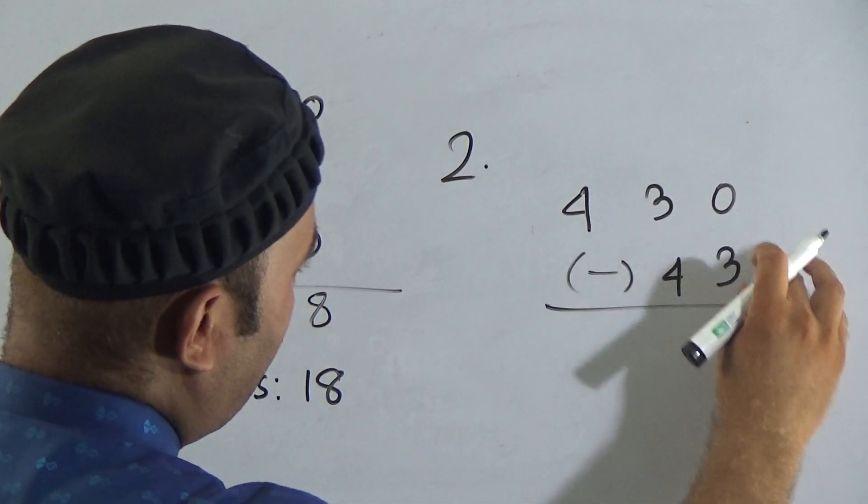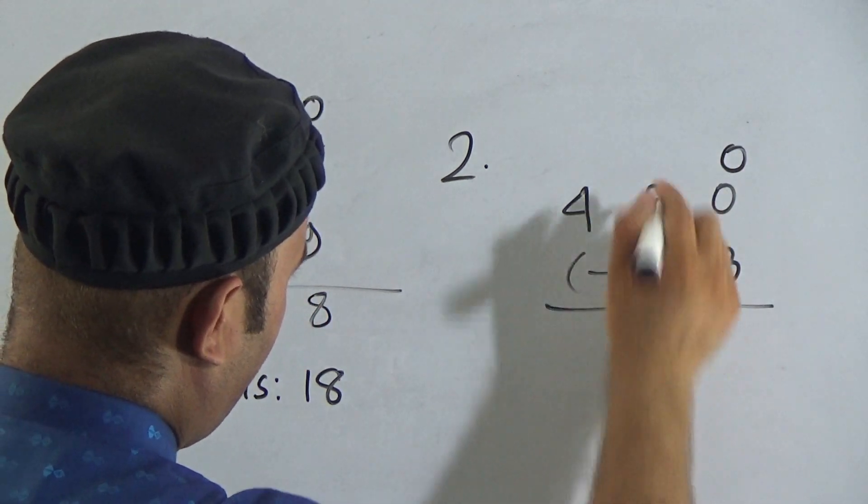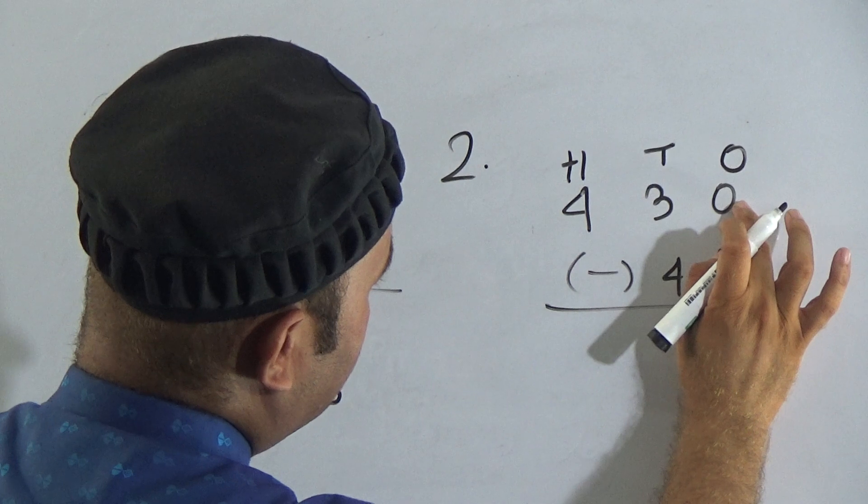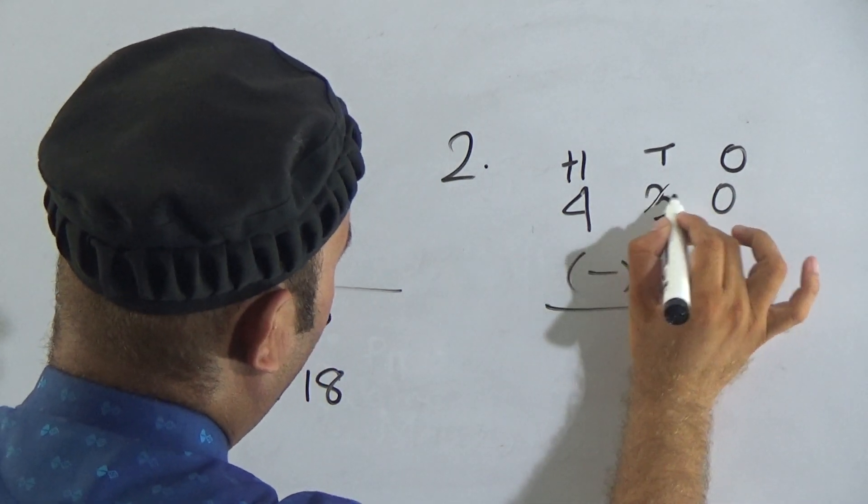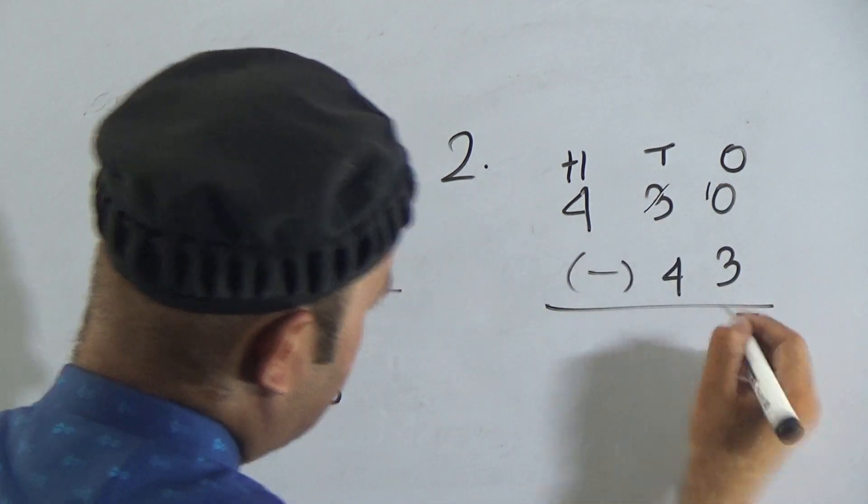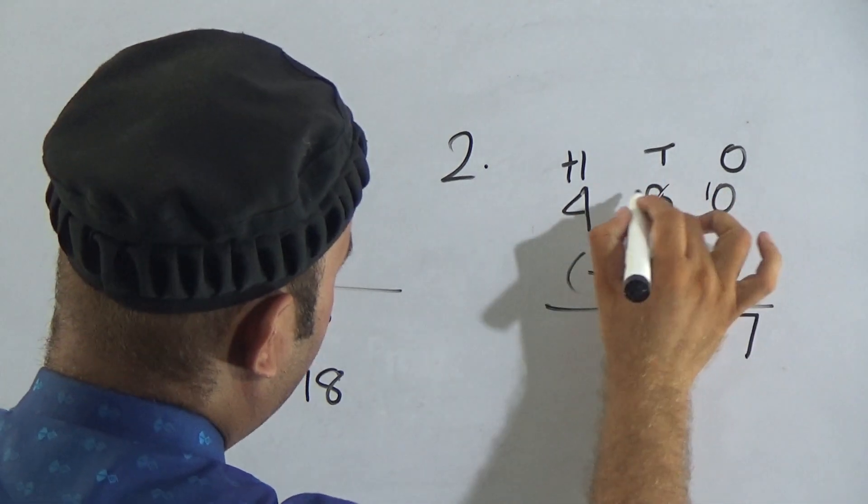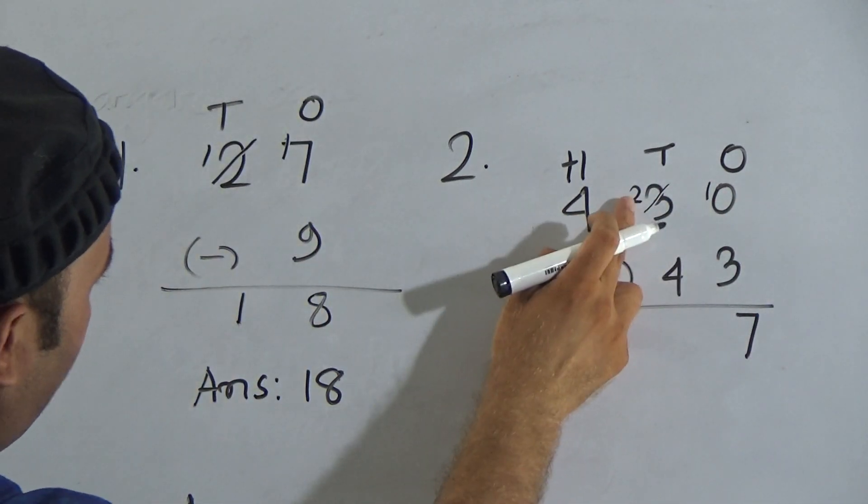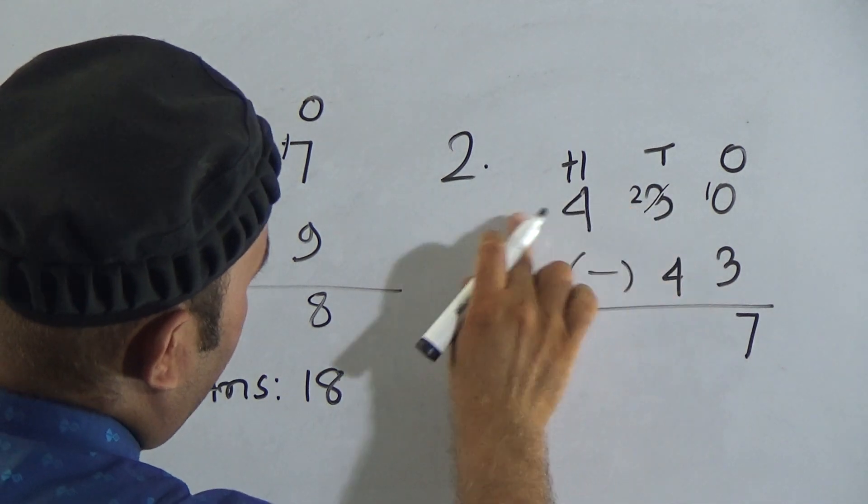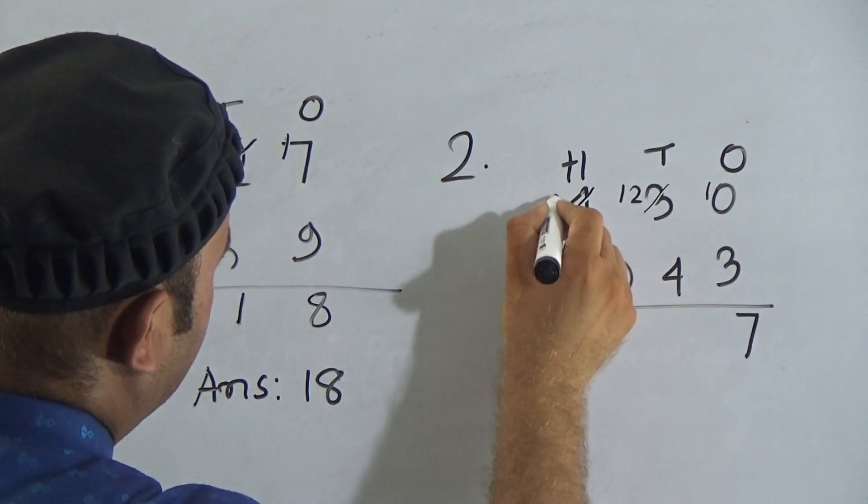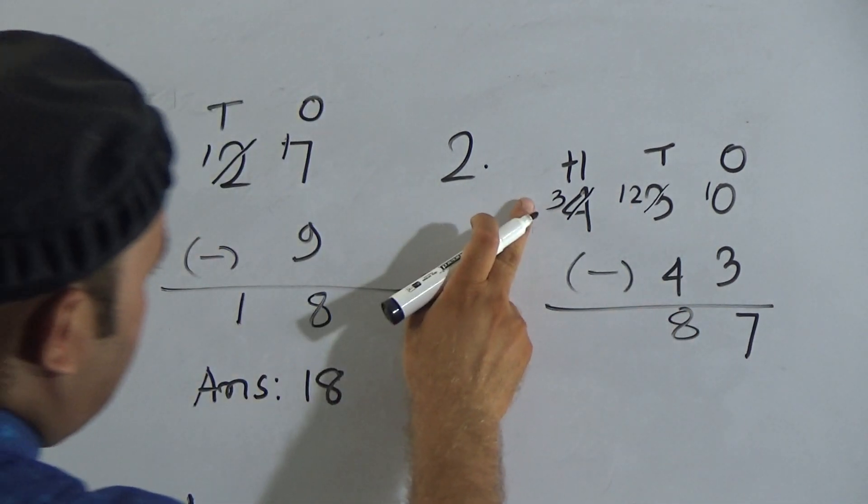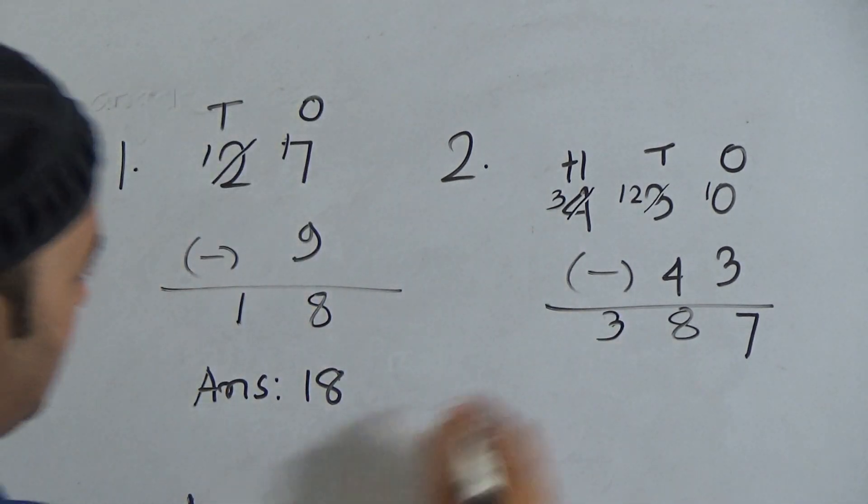Problem number 2: 430 and 43. 0 and 3 are in 1's place, 3 and 4 in 10's place, and 4 is in 100's place. 0 is smaller than 3, so we borrow 1, making it 10. 3 from 10 is 7. After giving 1, this becomes 2. Now 4 from 2—we borrow again from here, making it 12, and this becomes 3. 4 from 12 is 8, and 3 will be here. So the answer is 387.